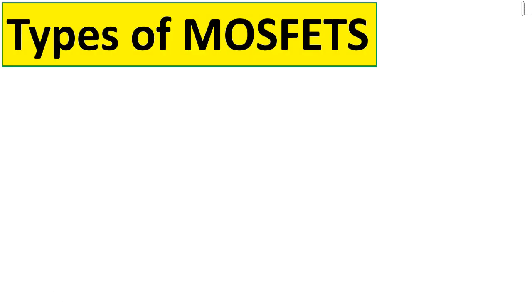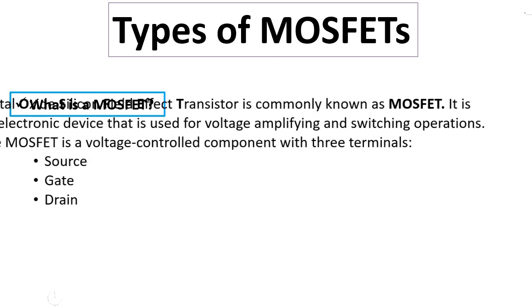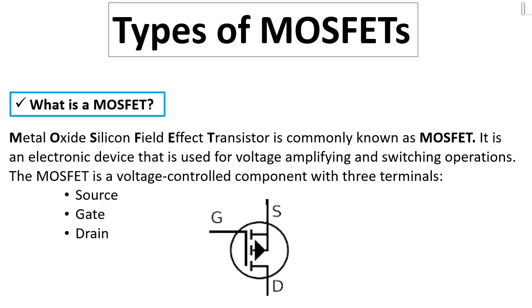In this video I'm going to show you types of MOSFETs. A metal oxide silicon field effect transistor, or MOSFET, is an electronic device that is used for voltage amplifying and switching operations. The MOSFET is a voltage-controlled component with three terminals: source, gate, and drain, as you can see in the schematic.